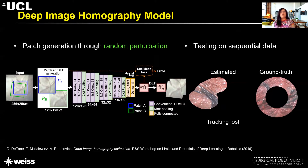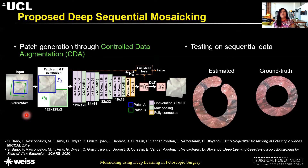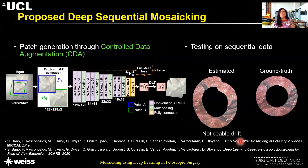To overcome this problem, we propose controlled data augmentation: instead of random perturbation, we only introduce rotation and translation during the training phase. Although the results significantly improved, there was still noticeable drift. This is because the model is trained on still images while being tested on sequential data, which has errors due to amniotic fluid particles floating around, varying light sources, and lack of texture.